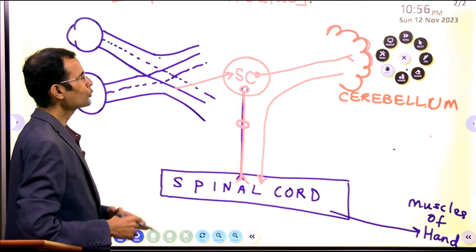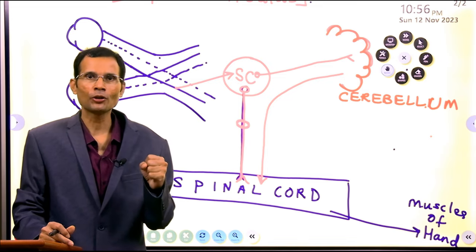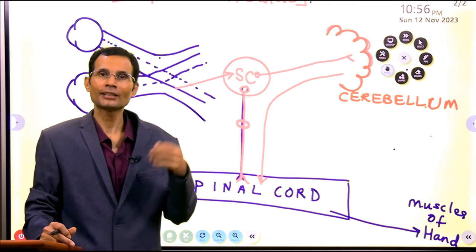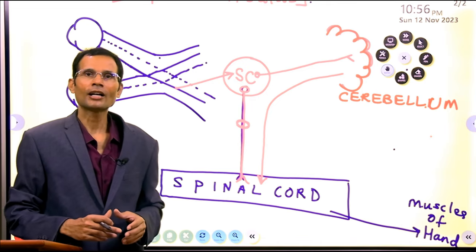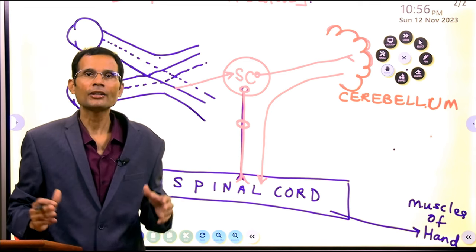So I believe those who have excellent eye-hand coordination have probably the superior colliculus working in excellent conditions, or in fact, maybe even larger than the other individuals. So that was the neural circuitry for eye-hand coordination.